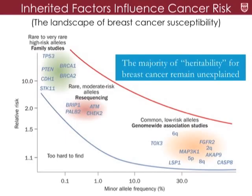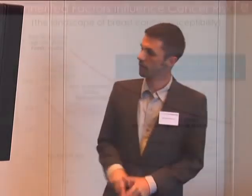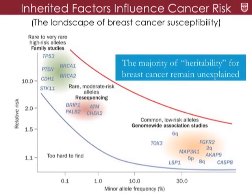On the other end of the spectrum, we have more common genetic variants — 30 to 50% of us may carry common variants that confer very low increases in risk for breast cancer. You may just go from a 5% risk to a 6% lifetime risk of breast cancer. These are the types of genetic features we're interested in identifying.